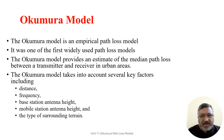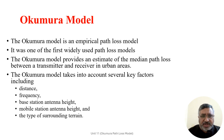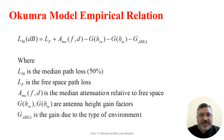The Okumura model takes into account many key factors that were not introduced in earlier models, which influence path loss in urban environments, including distance, frequency, base station antenna height, mobile station antenna height, and the types of surroundings around the wireless communication system. The Okumura model is one of the most widely used models for microwave signal propagation prediction in urban areas.